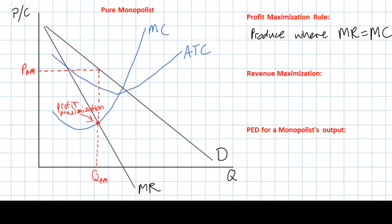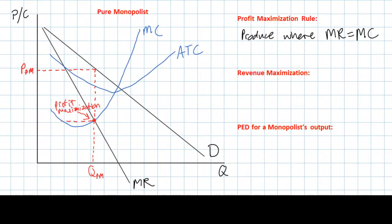If a monopolist charged a price lower than that — equal to its marginal revenue, for example — there would be a disequilibrium in the market because the quantity demanded at that price would be much greater than the quantity the monopolist is actually producing. There would be a shortage at a price of MR. Therefore a monopolist will not charge that price; instead it will charge the price that consumers are willing to pay for the quantity QPM.